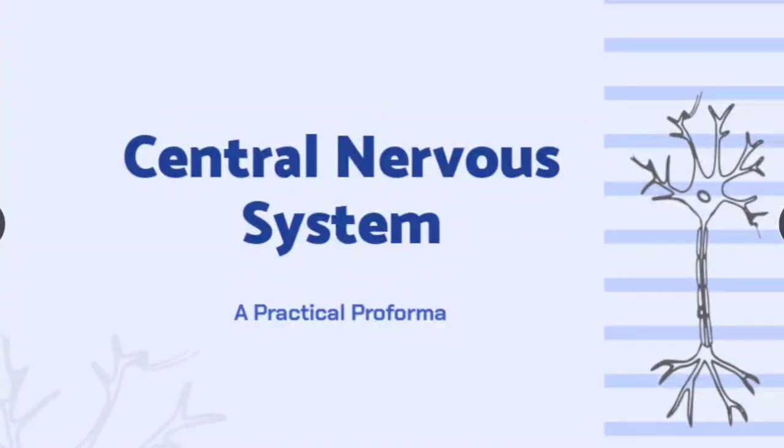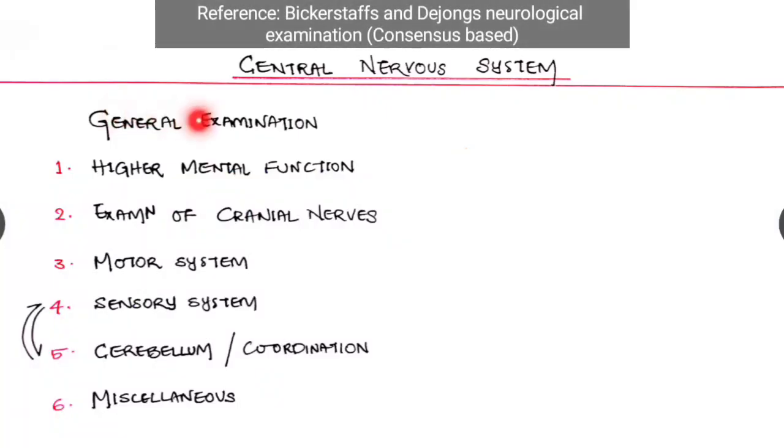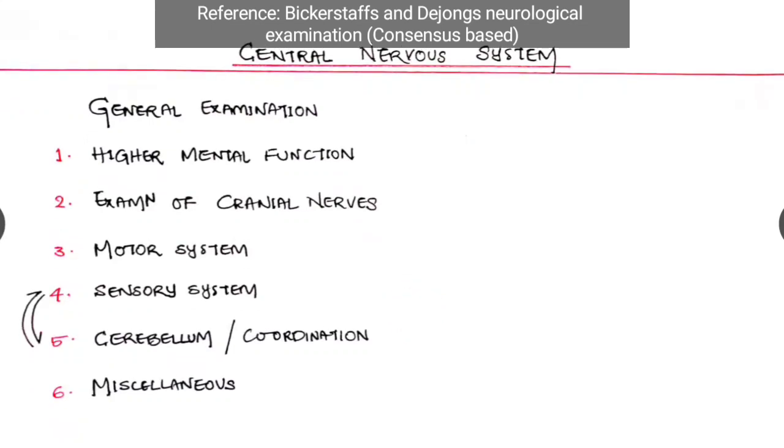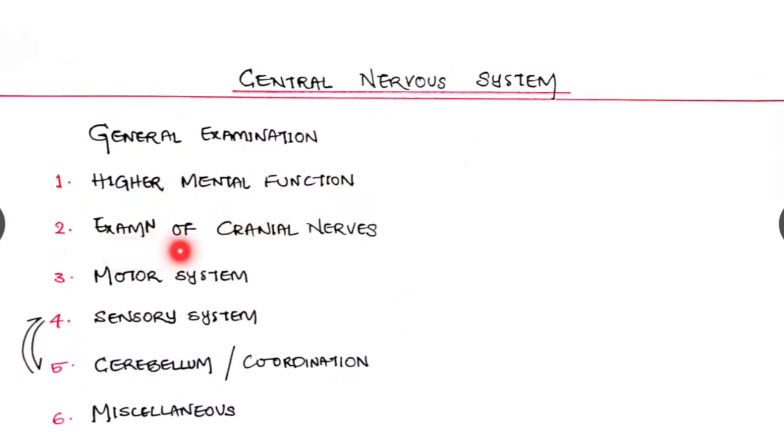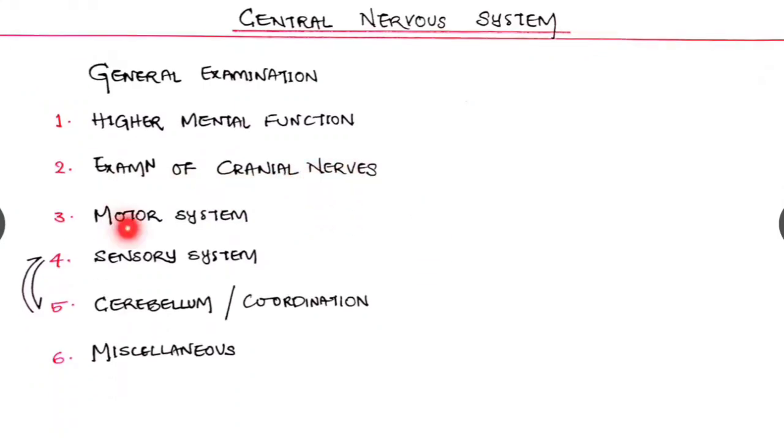Once again welcome to Medicomallu. This time we have to see the central nervous system practical proforma. First of all start with the general examination and the first subheading is higher mental functions, next is examination of the cranial nerves, then the motor system, then either the sensory system coming first or the cerebellar system and lastly the miscellaneous.